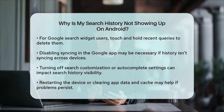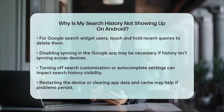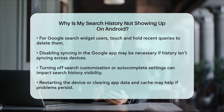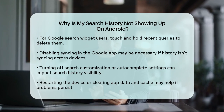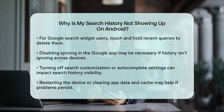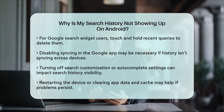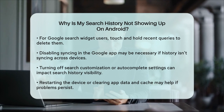By checking these settings and ensuring that your Web & App Activity is on, you should be able to see your search history on your Android device. If the issue persists, it might be helpful to restart your device or clear the app's data and cache to start fresh.